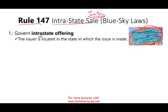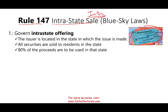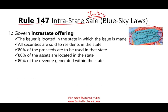The issuer first will have to be located inside the state — for example, Pennsylvania. All the securities are sold to residents in the state; the people financing the company are residents of the state. 80% of the proceeds are used in the state to expand the business, 80% of the assets are located in the state, and 80% of the revenue is generated within the state. It makes sense that you're operating in the state — the SEC is a federal regulation, and if you are operating within your state, the SEC is not concerned with you because it's concerned with interstate commerce.